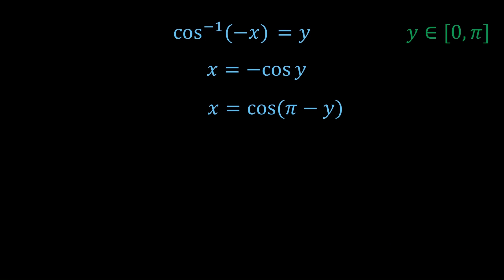So we have this is equal to cos π minus y. And now we want to take the cos inverse of both sides. But we just should state that π minus y is also in the domain 0 to π. So that means we can take cos inverse of both sides without any troubles.